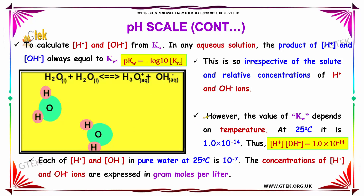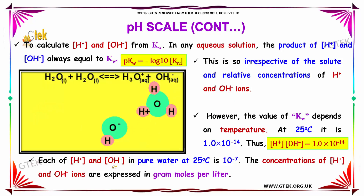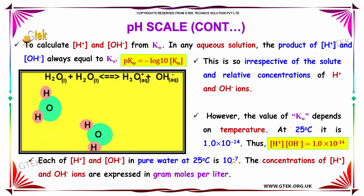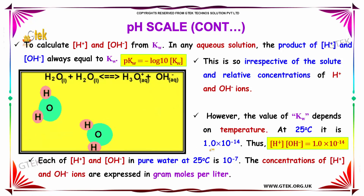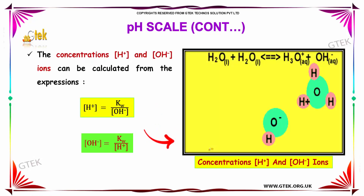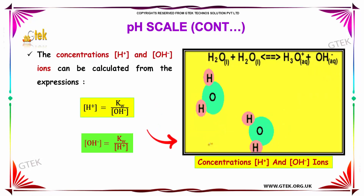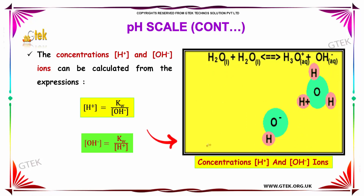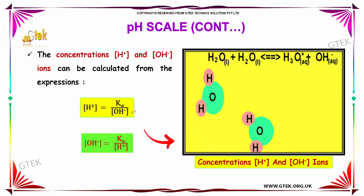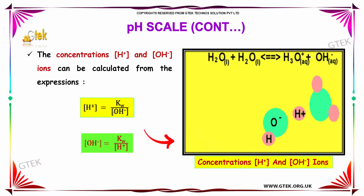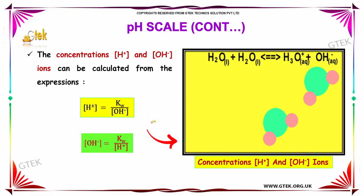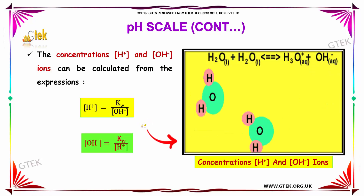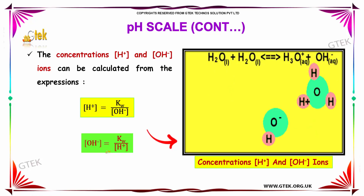If we compare H+ and OH- in pure water, each is 10^-7. The concentrations of H+ and OH- are always expressed in grams moles per liter. These concentrations can be calculated from the following relations: the H+ concentration equals the equilibrium constant KW divided by the OH- concentration, and similarly, the OH- concentration equals KW divided by the H+ concentration.